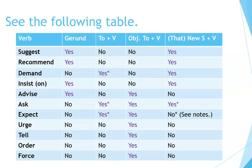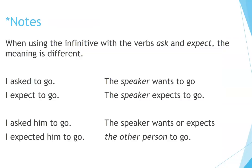Continuing the table: Expect: gerund no, to+verb yes, object+to+verb yes, that-clause no (see notes). Urge: gerund no, to+verb no, object+to+verb yes, that-clause no. Tell: gerund no, to+verb no, object+to+verb yes, that-clause no. Order: gerund no, to+verb no, object+to+verb yes, that-clause no. Force: gerund no, to+verb no, object+to+verb yes, that-clause no.